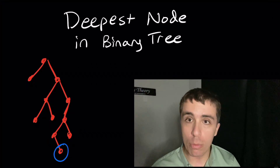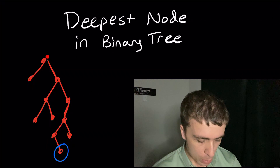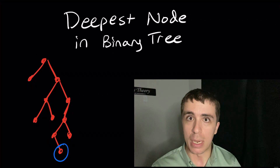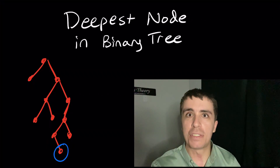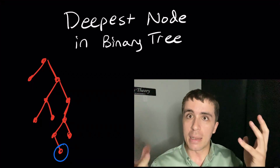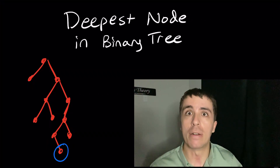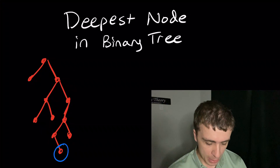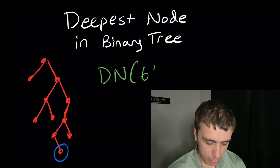How do we actually find this? I'm going to show you several different ways. One way is to say this node at the top is the root, so what we can do is try to find the deepest node on the left side, the deepest node on the right side, and then compare how deep they are and return whichever has the bigger depth. The algorithm here — let's call it dn, deepest node of a binary tree, let's call it bt. Whenever you have a binary tree, you should usually appeal to a recursive algorithm, and that's what we're going to do here.